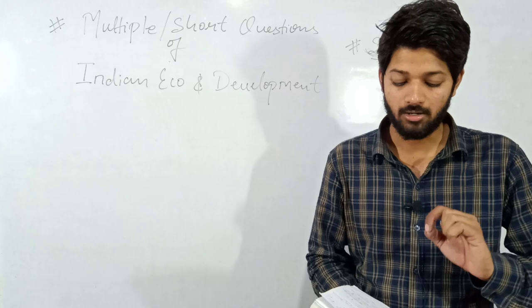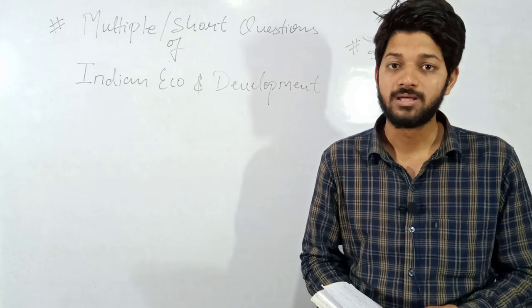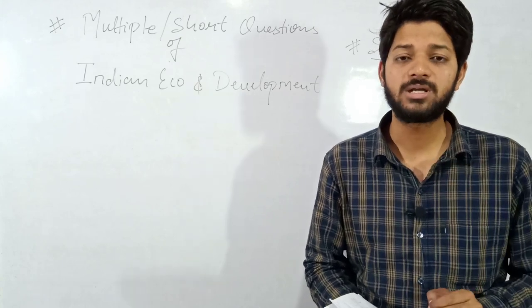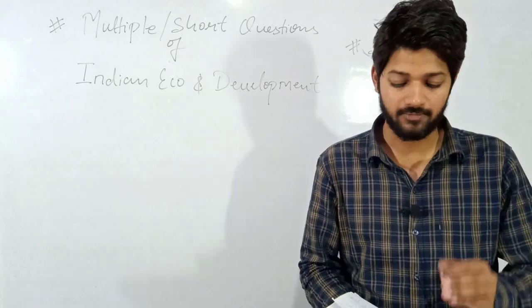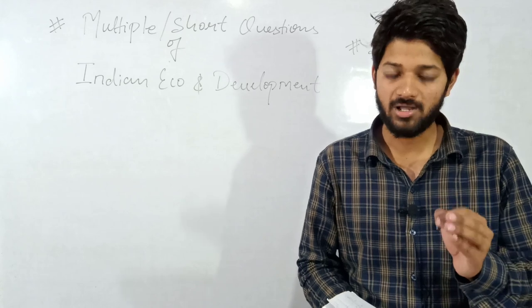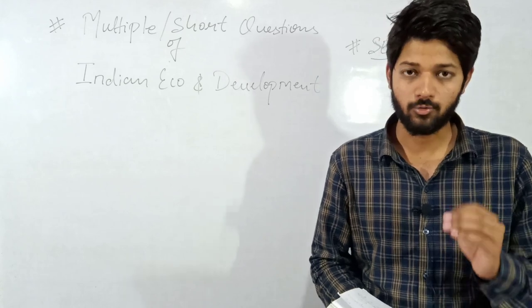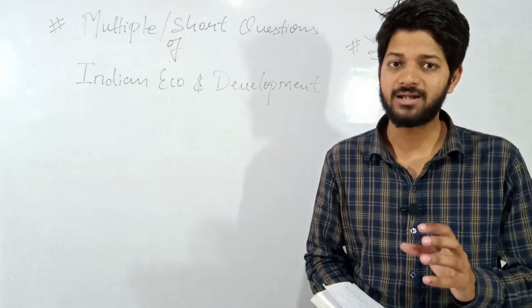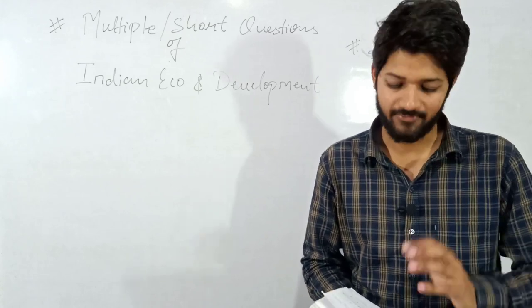Question number twenty-five: the Karve Committee was constituted for what purpose and in which year? Remember this — very important. The Karve Committee was constituted for small-scale industry and rural development, in the year 1955.